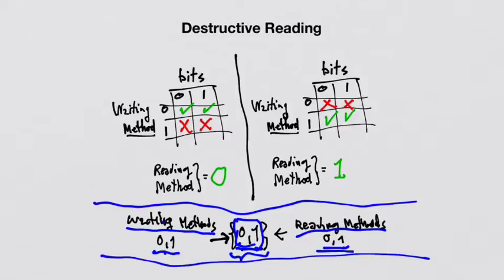Now, suppose that we decide to read bits with method zero. Then, if the writing method of those bits was method zero, then the reading will be correct. We will read the value that was written.